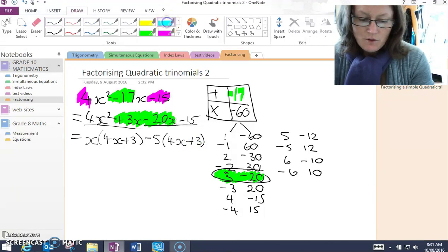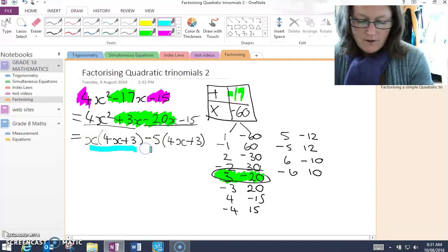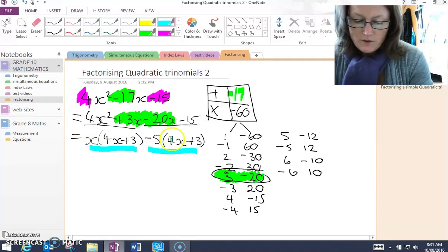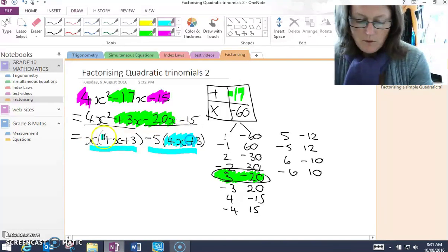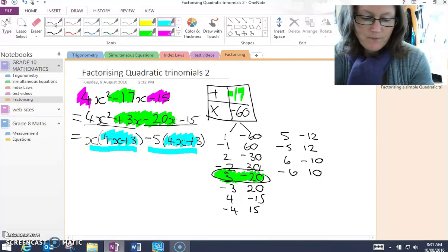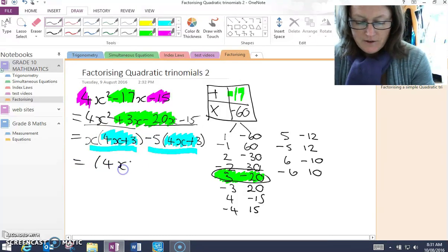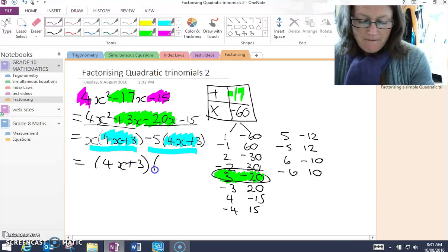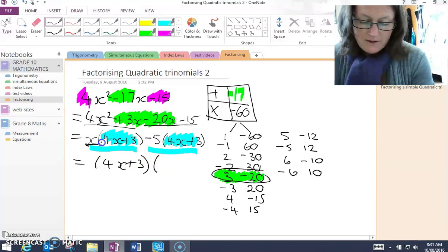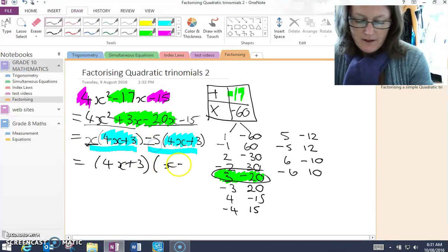I now have two terms. For these two terms, what's in the brackets is common. So what's in the brackets is taken out as the common factor. And we are left with x take 5.